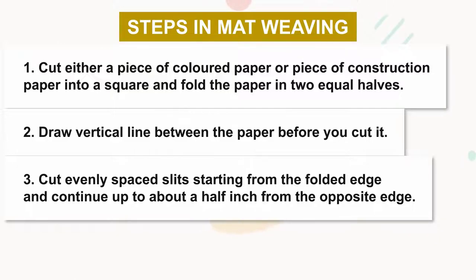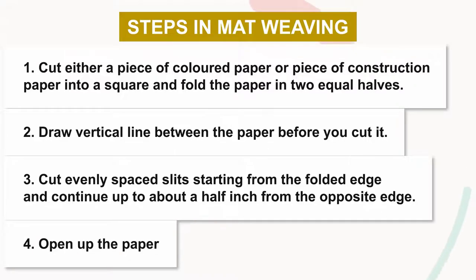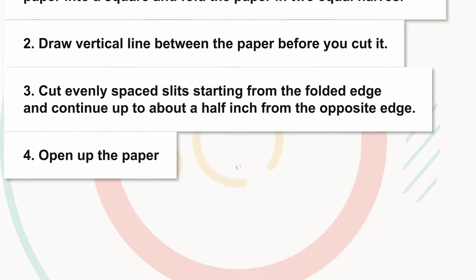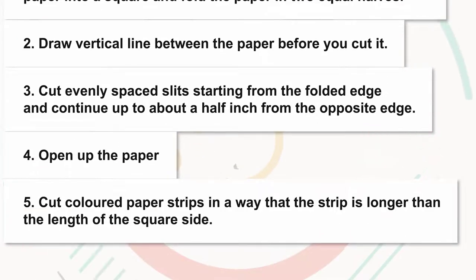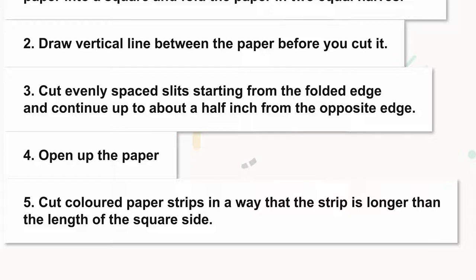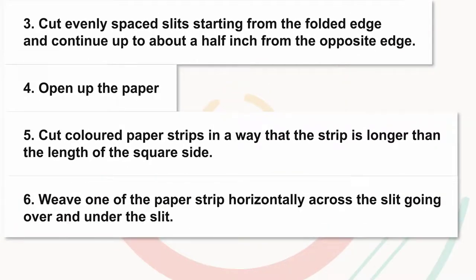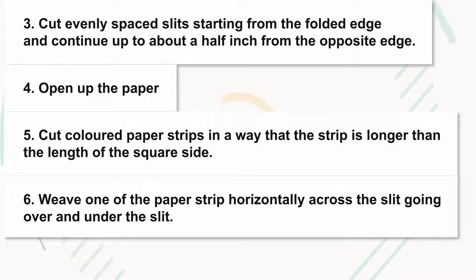Step four: open up the paper. Step five: cut colored paper strips in a way that the strip is longer than the length of the square side. Step six: weave one of the paper strips horizontally across the slits, going over and under the slits.